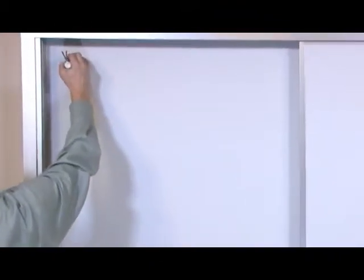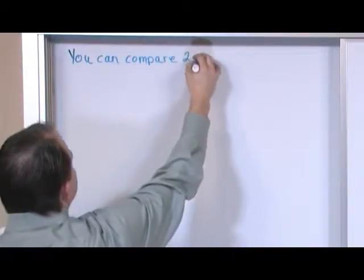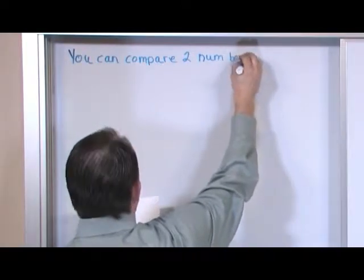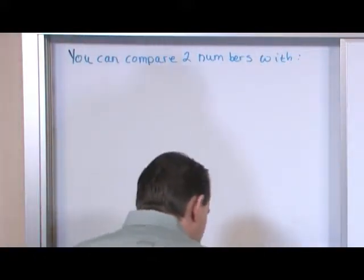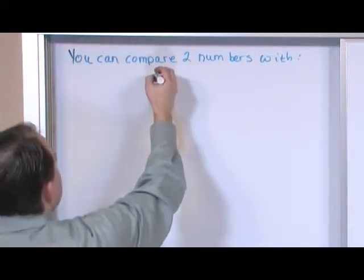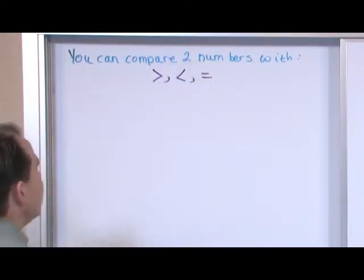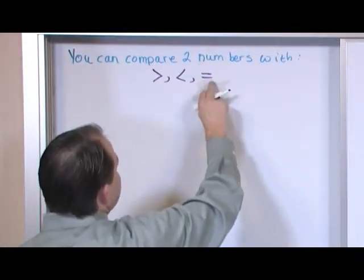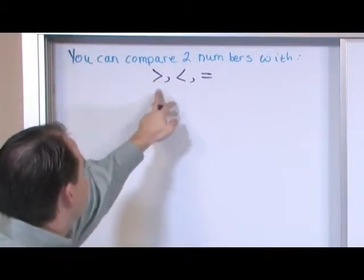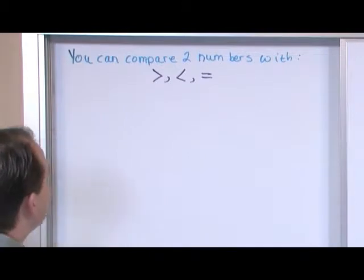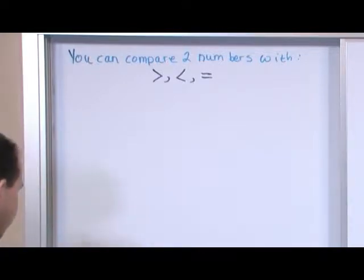You can compare two numbers with the following three symbols, and this is the part that usually trips people up: the greater than symbol, the less than symbol, and of course the equal to symbol. These symbols can get tricky because they look the same — they're just pointed in different directions — and it's hard for people to remember which way to point them.